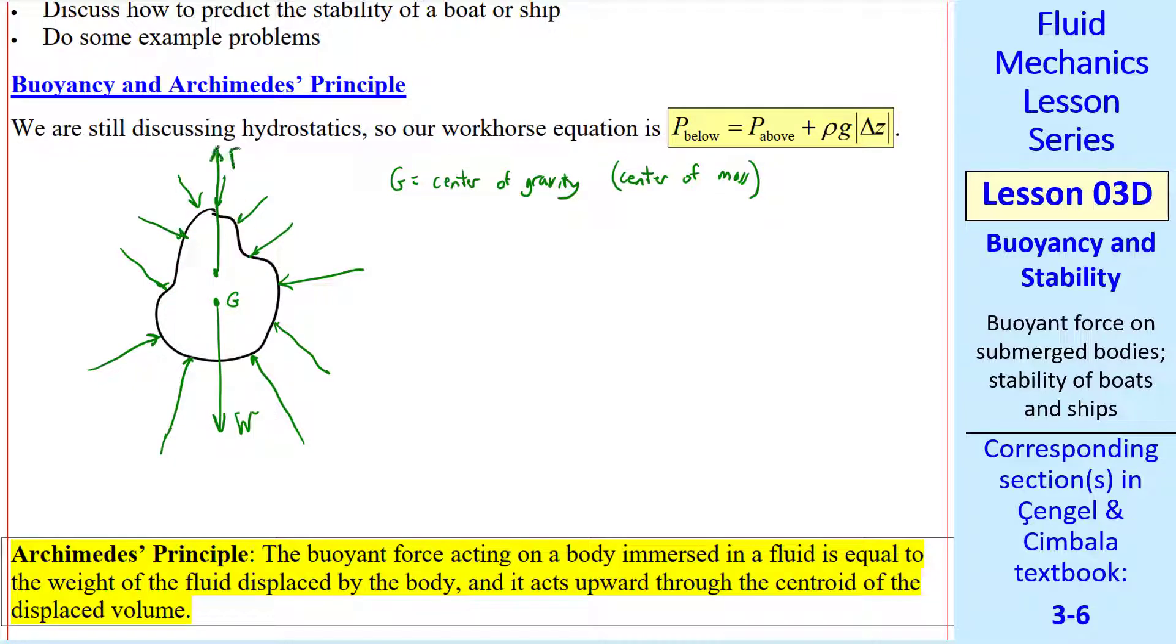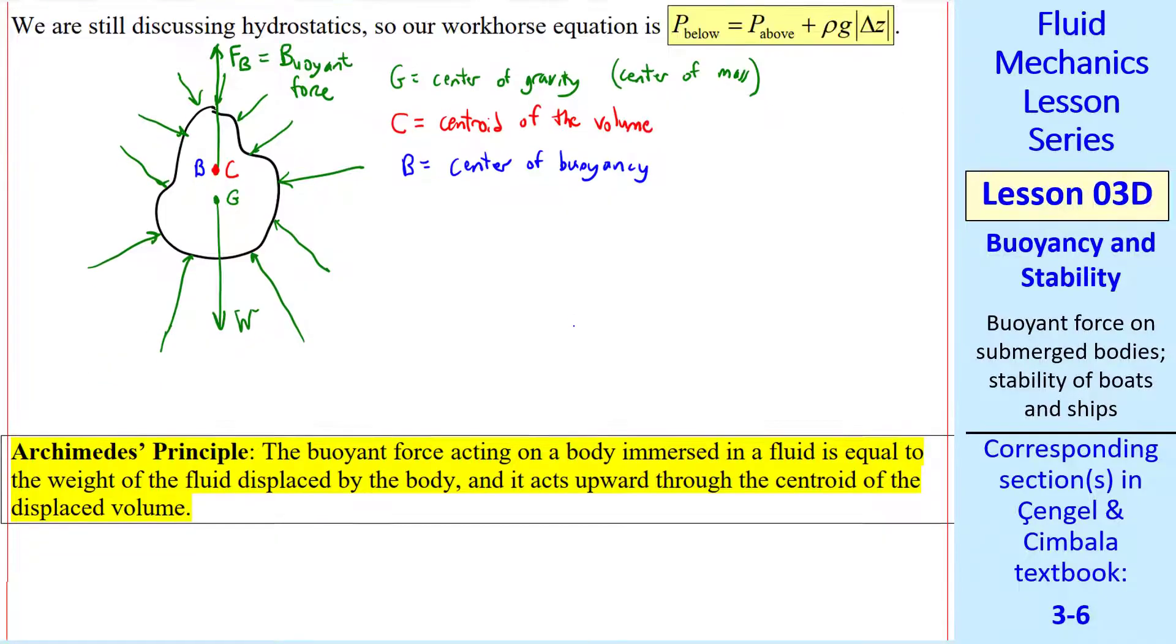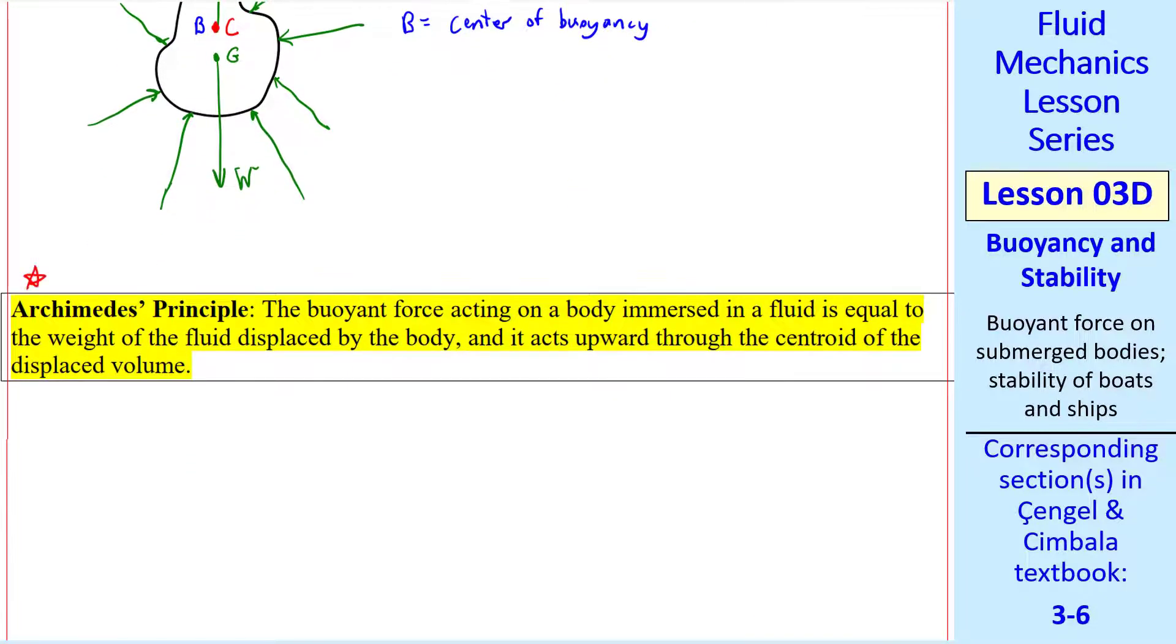This results in a net buoyancy force, which is the resultant force by integrating all these pressures over the area. This buoyant force acts at a different location. We'll call it C, the centroid of the volume. We also call it B, or the center of buoyancy. Archimedes' Principle is relevant here. It states that the buoyant force acting on a body immersed in a fluid is equal to the weight of the fluid displaced by the body, and it acts upward through the centroid of the displaced volume.